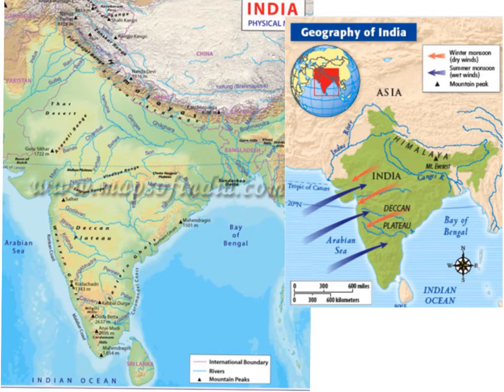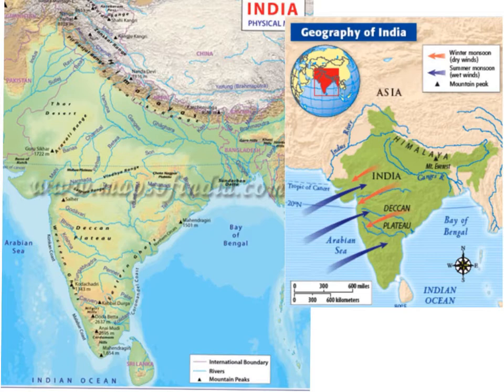Chapter 4, Ancient India. Important features of India are the mountains, the oceans, and the winds that blow across the region. They are shown here on the map.